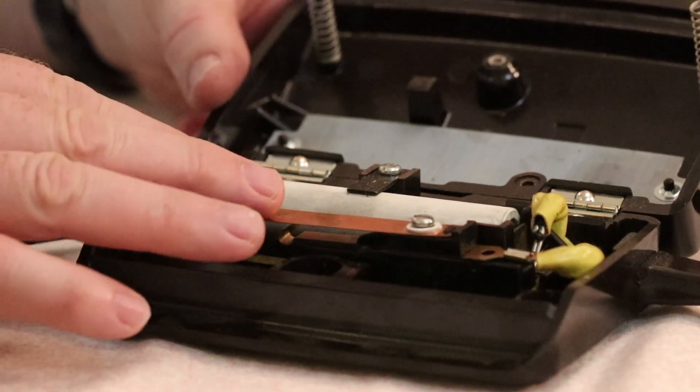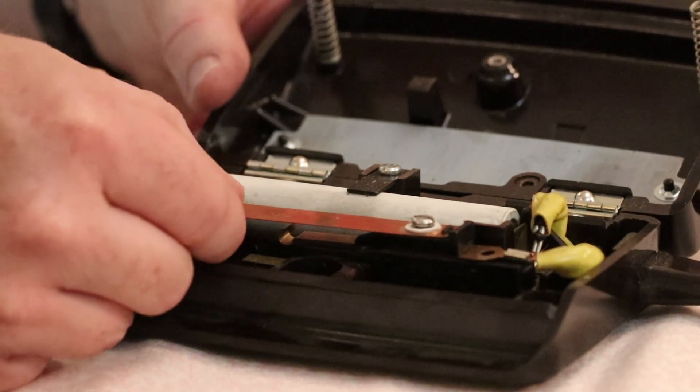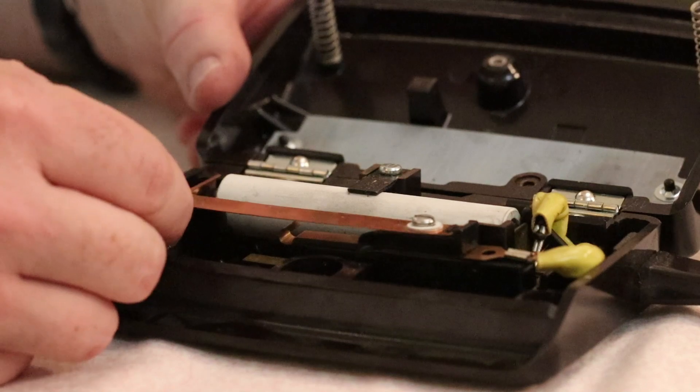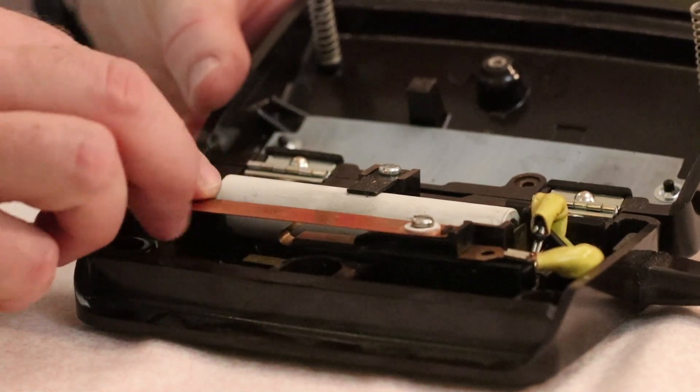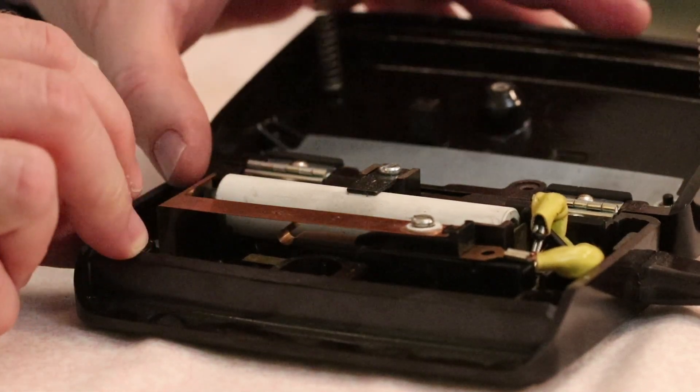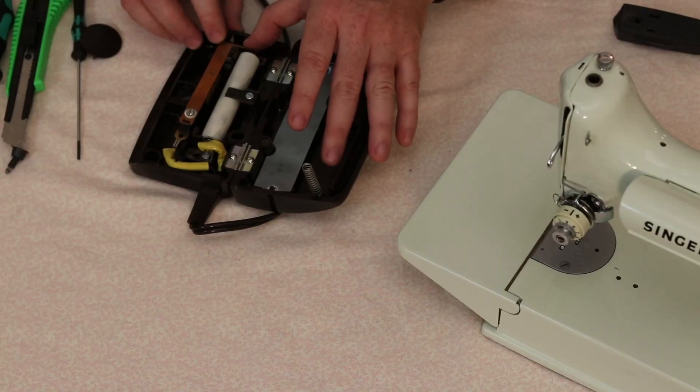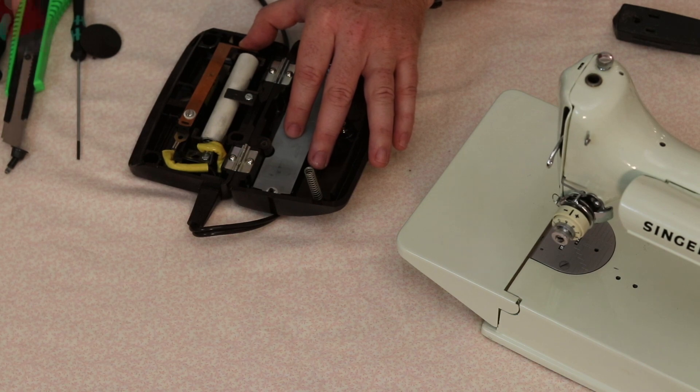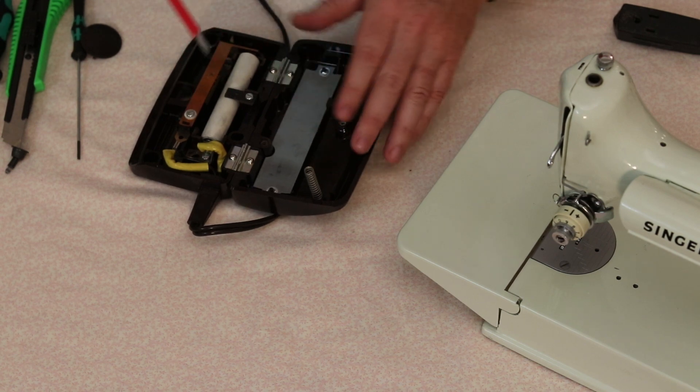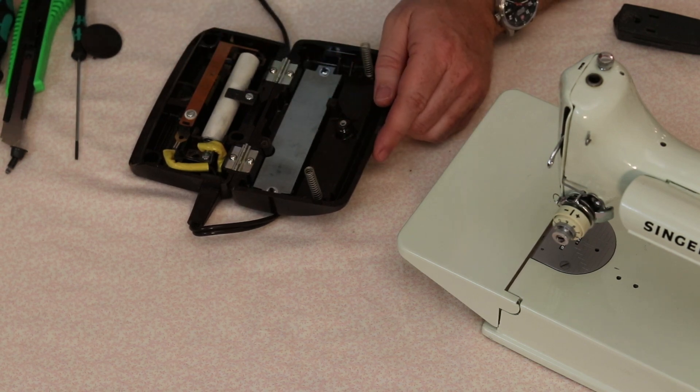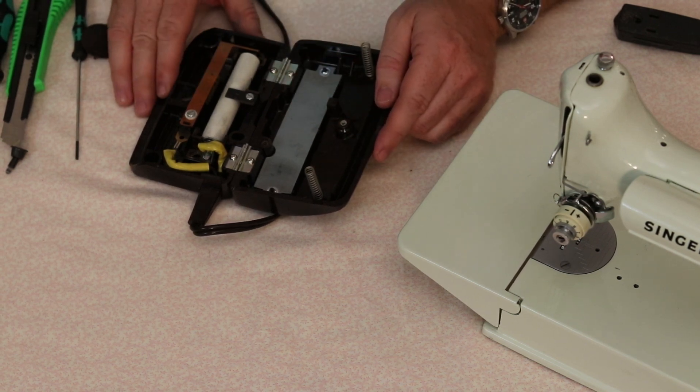This one although it does not have the adjustment screw, this copper tab itself is adjustable. So you can move it either direction. So we would want to if this one was out of adjustment and had become loose, we would slide it over and tighten that screw back down. And then that would give us our full range of power on this one as well.